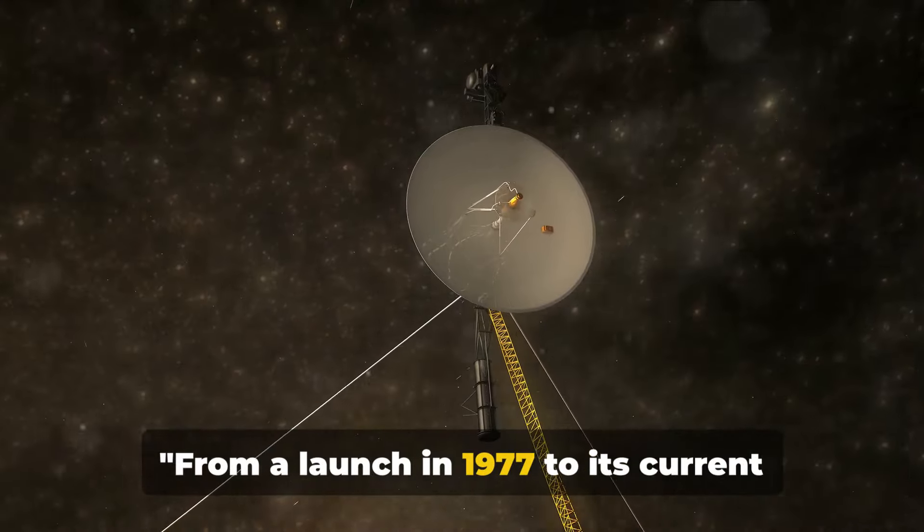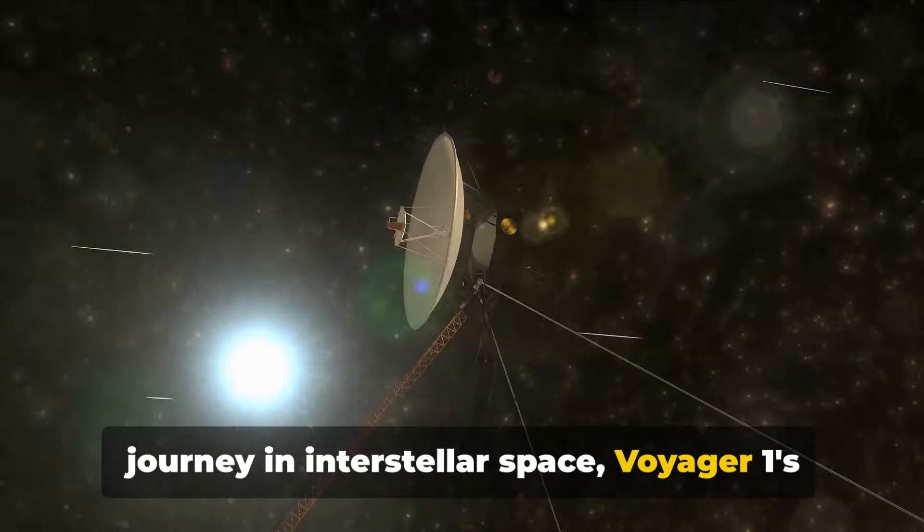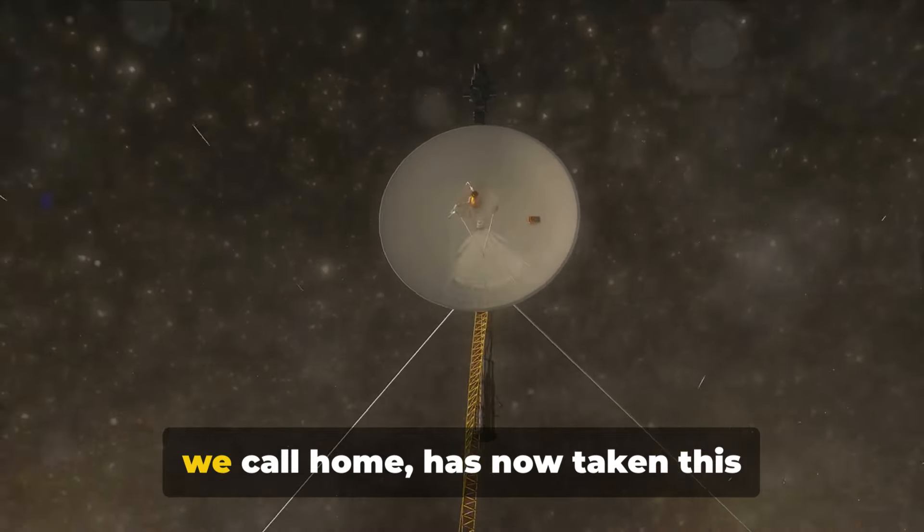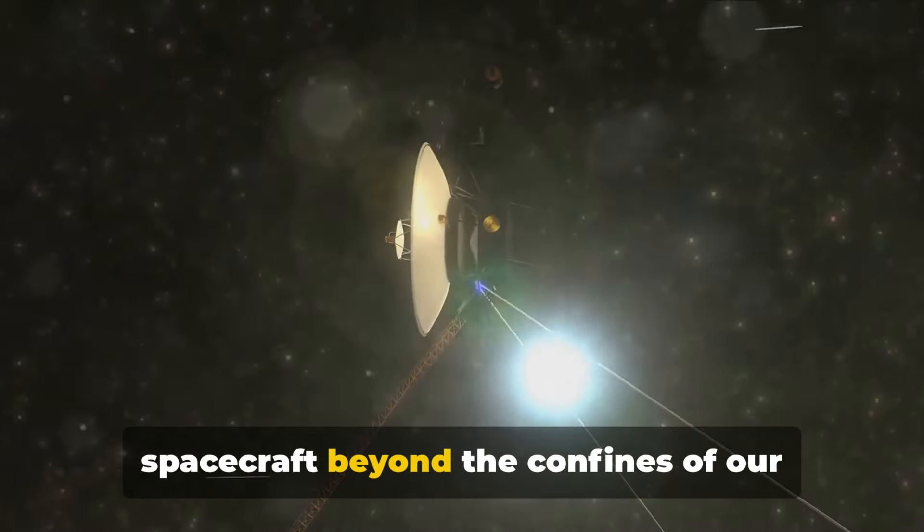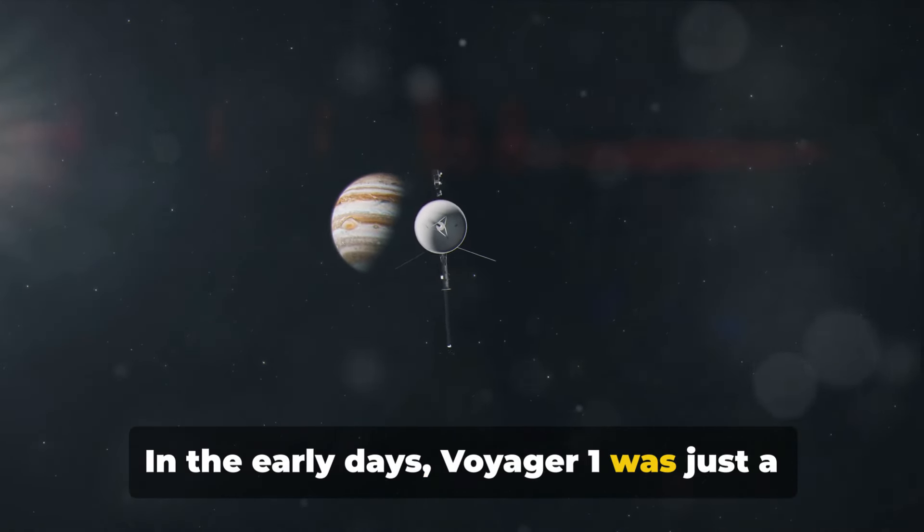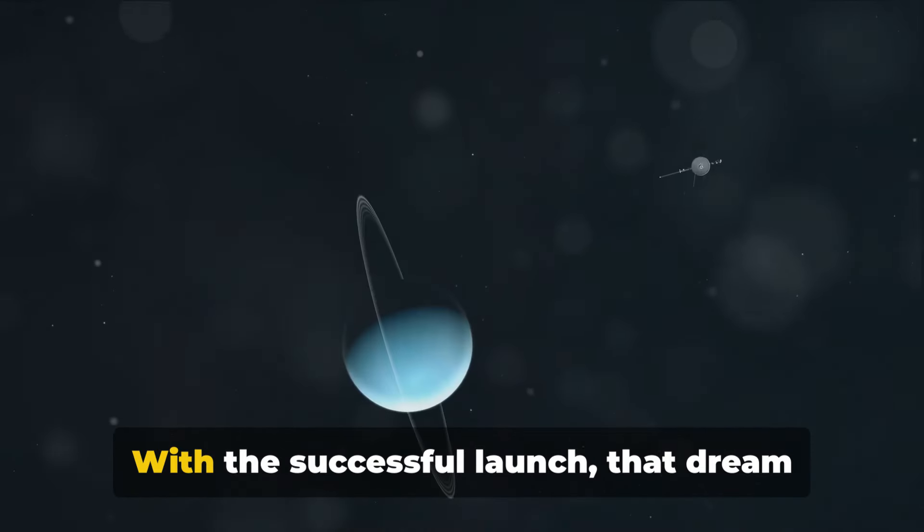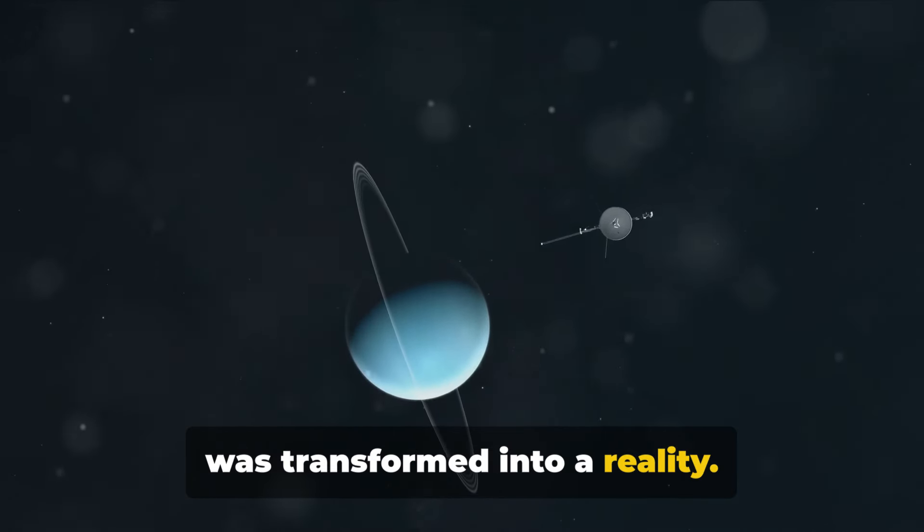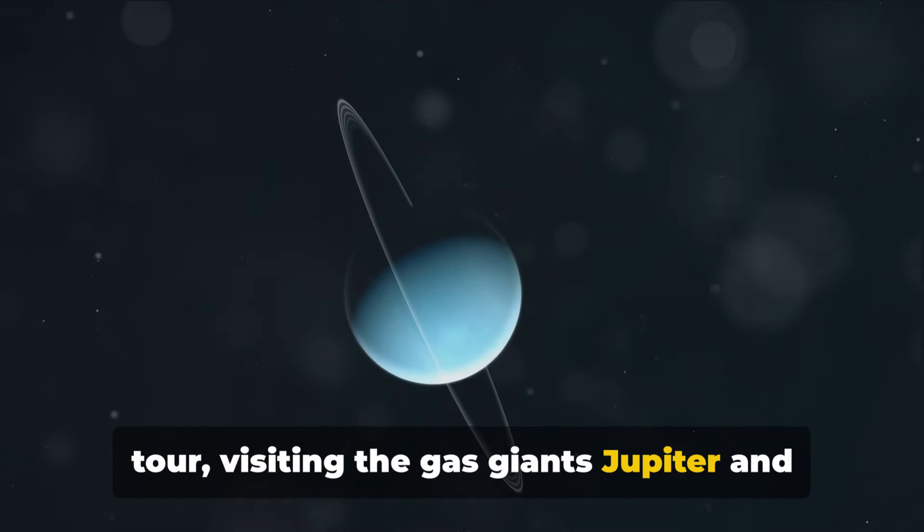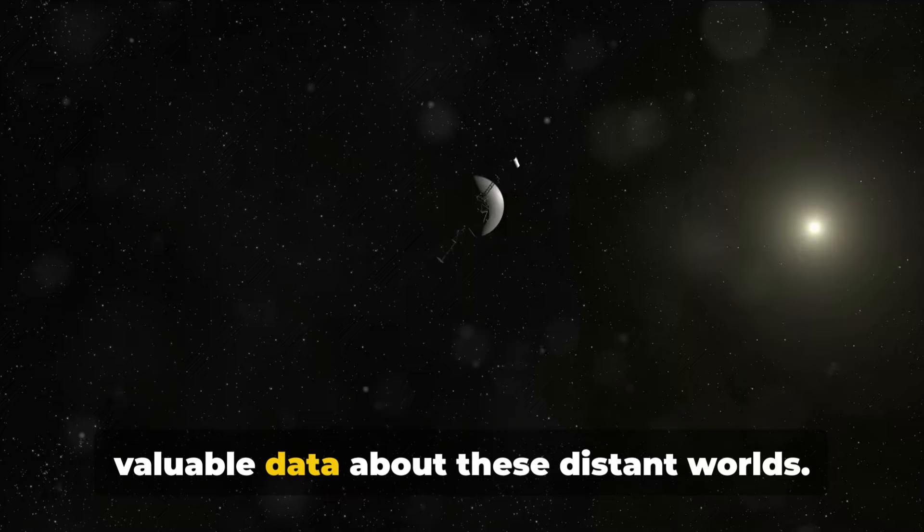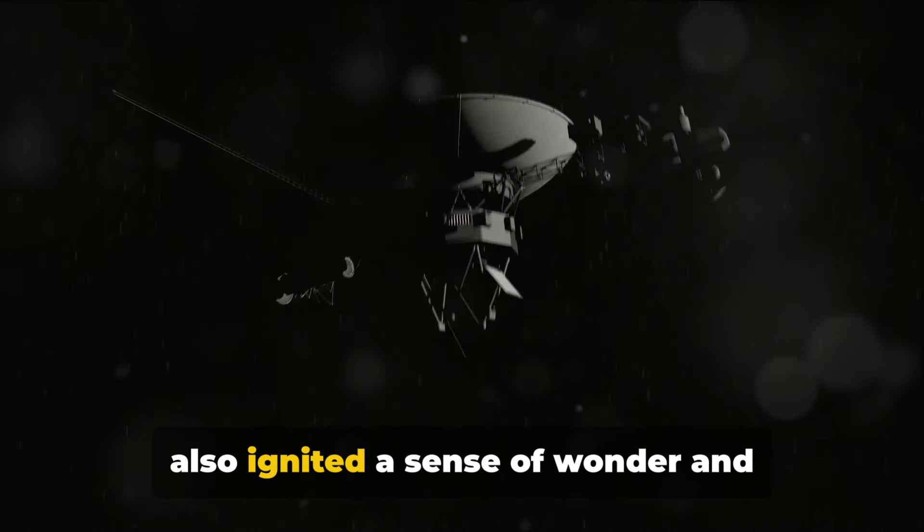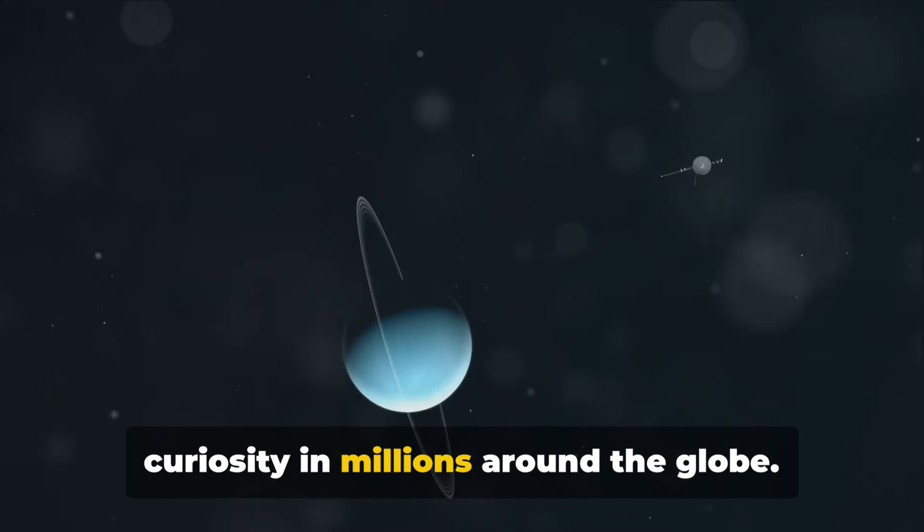From a launch in 1977 to its current journey in interstellar space, Voyager 1's mission has been one of discovery and exploration. A journey that started on the blue marble we call home has now taken this spacecraft beyond the confines of our solar system and into the vast unknown. In the early days, Voyager 1 was just a dream, a concept on paper. With the successful launch, that dream was transformed into a reality. The spacecraft embarked on its grand tour, visiting the gas giants Jupiter and Saturn, capturing stunning images and valuable data about these distant worlds.